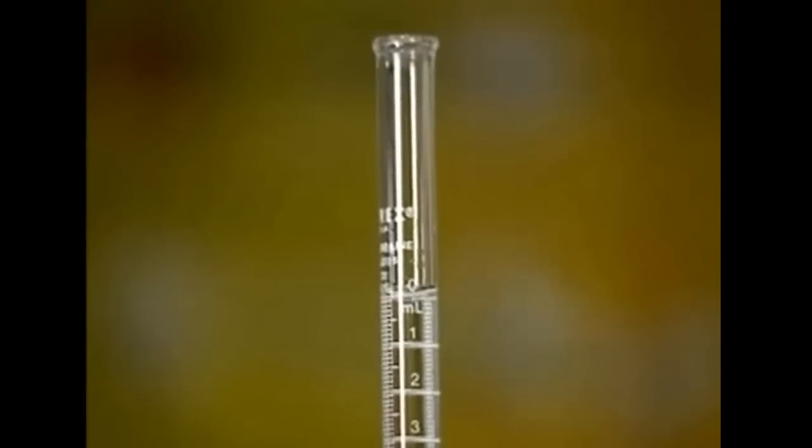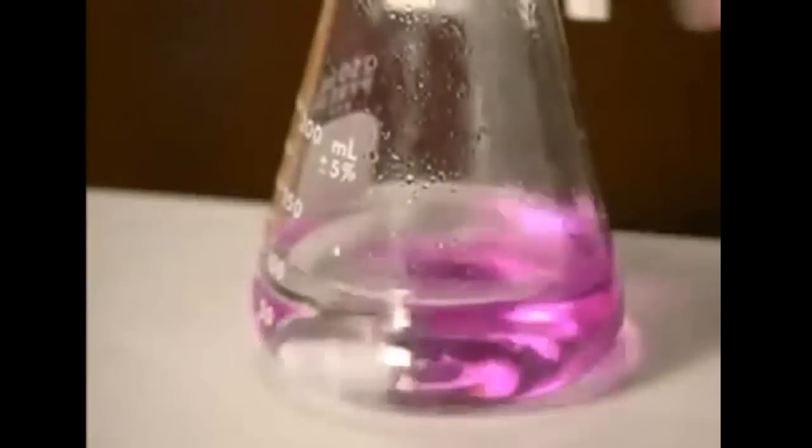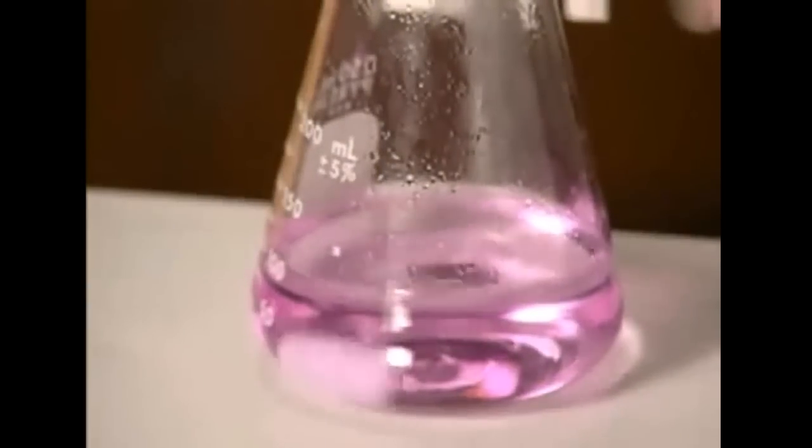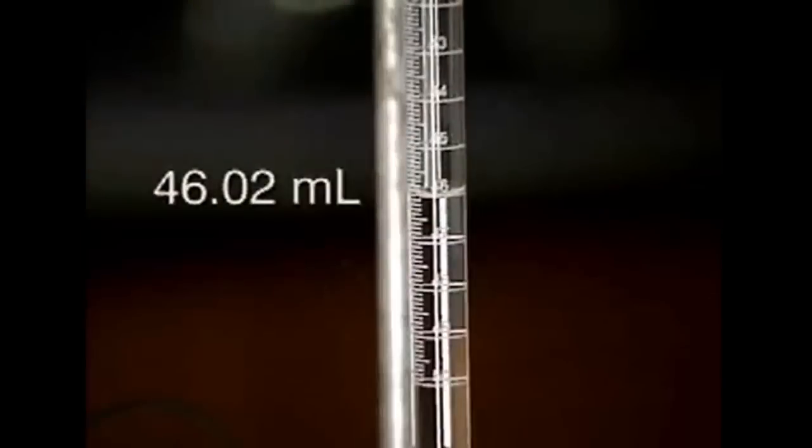The burette is filled with a sodium hydroxide solution of known strength and an initial reading is taken. The base is added to the acidic solution until the solution stays a slightly pink color. At this endpoint, a final reading is taken. The moles of base added equal the moles of acid present.